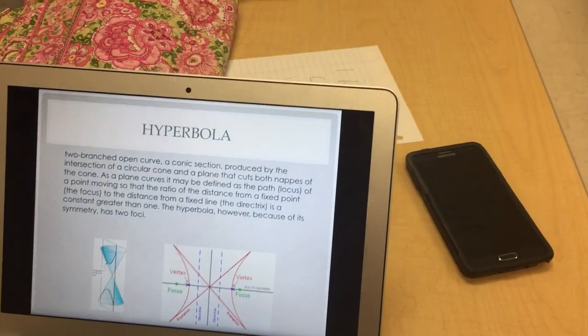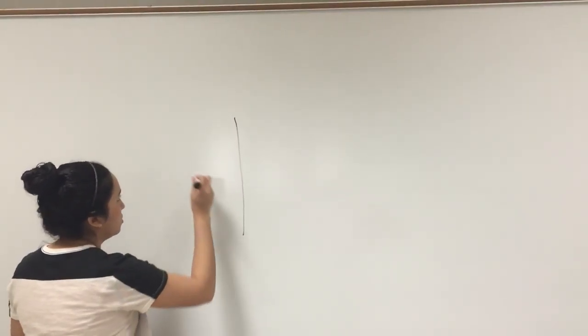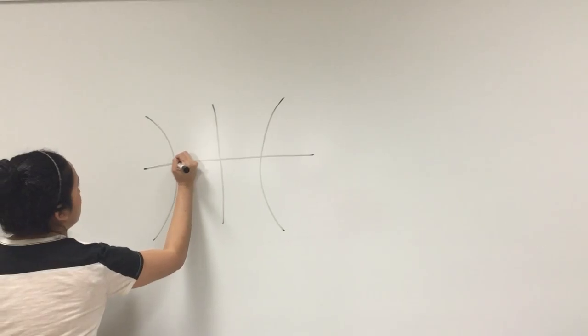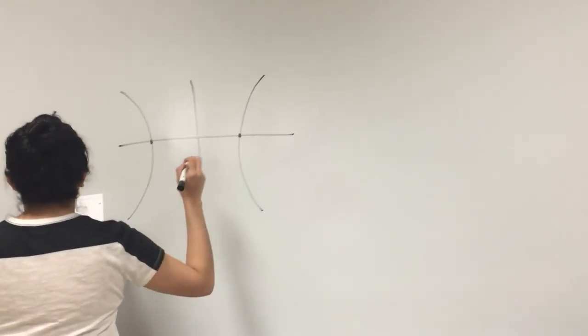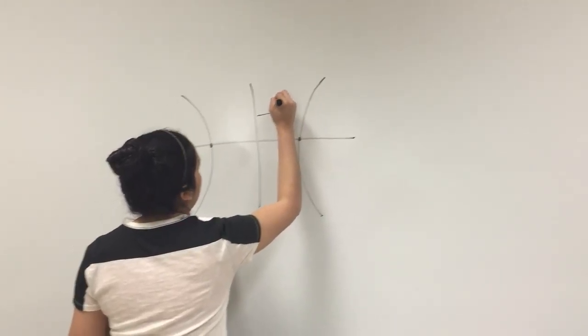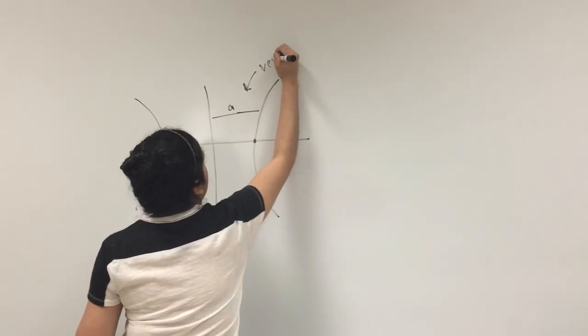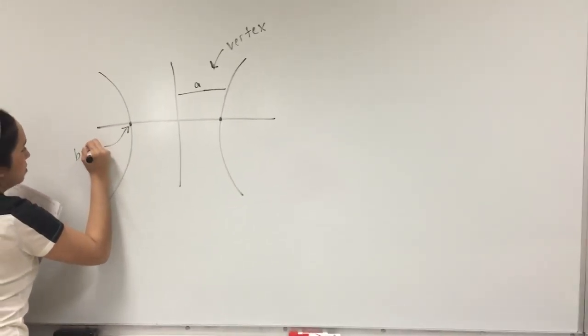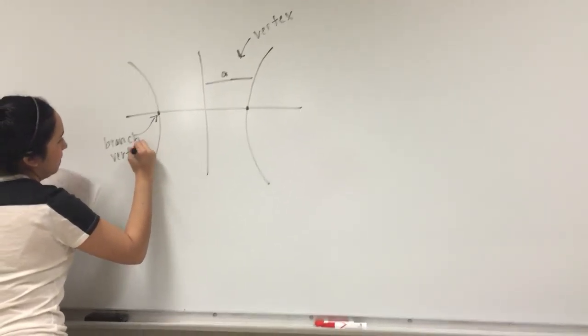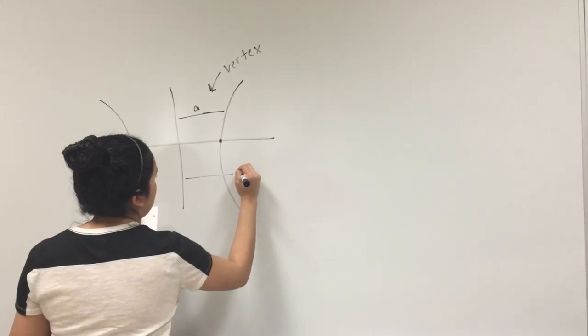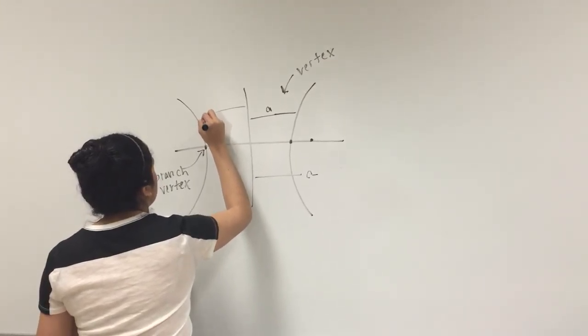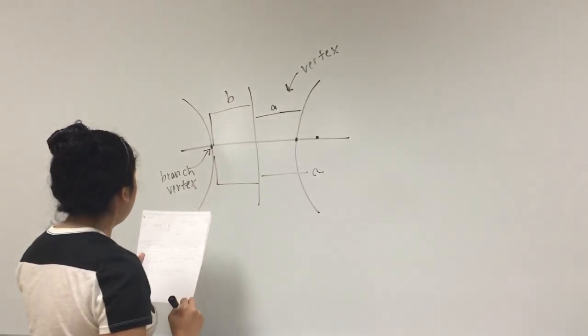So I am going to explain the basic hyperbola. A hyperbola is like a mirrored image. So for example, if we have this here, this is our vertex, I am going to name it A. Then we have our branch vertex, which are these. And then we have C, which is right here, and I am going to name this B, which is the distance from each other.